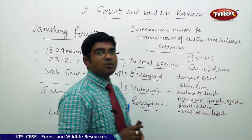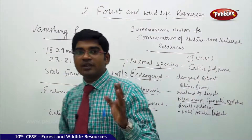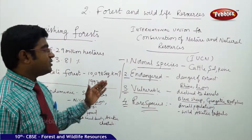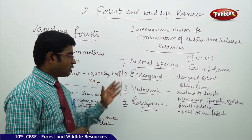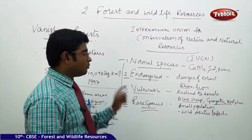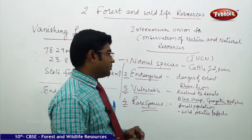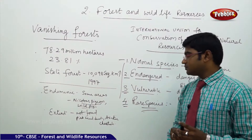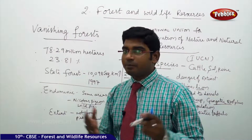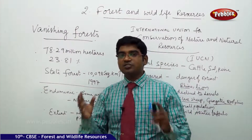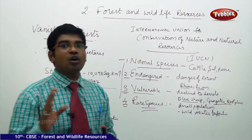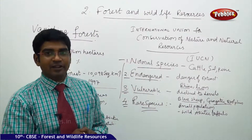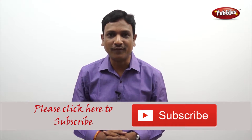To summarize, the IUCN — the International Union for Conservation of Nature and Natural Resources — has categorized animals into six major types based on their availability: Normal (cattle, sal pine), Endangered (rhino, lion), Vulnerable (blue sheep, Gangetic dolphins), Rare (wild Asiatic buffalo), Endemic (Nicobar pigeon, wild pigs), and Extinct (pink-headed duck, Asiatic cheetah). This categorization shows that in India, as deforestation continues on a large scale, it is resulting in the endangerment of the species found in our country.